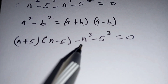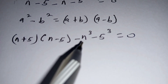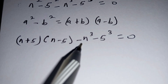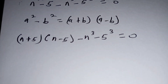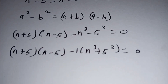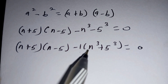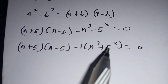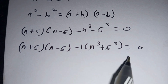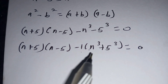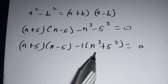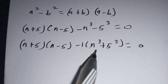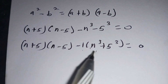Now for this part, we can see that negative 1 is common. So we factorize negative 1 in this part. Negative 1 will be left with positive n cubed, and the negative 5 cubed will be left with positive 5 cubed, which is equal to 0. At this part here, we are going to apply the difference of a perfect cube.